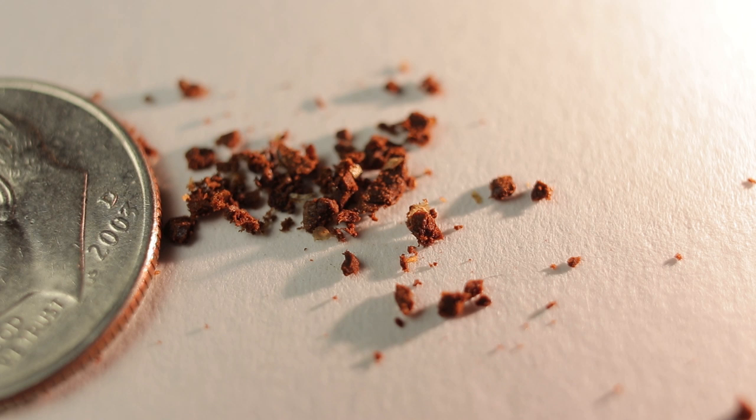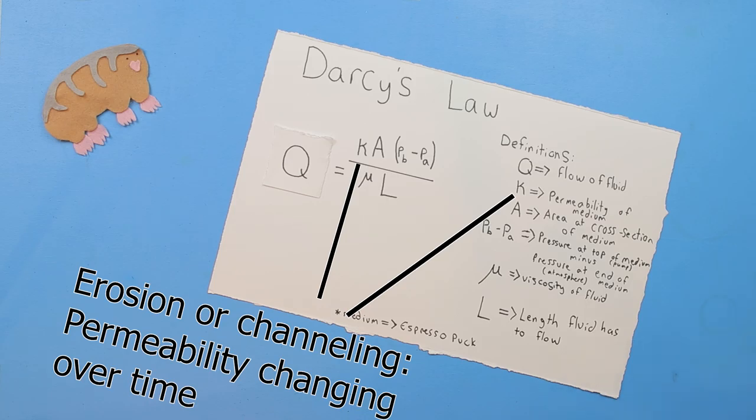Now the next main concepts to review are erosion and channeling, which can be thought of as changes in k over time. Often where there's a trickle of water flowing, it will bring the smallest coffee particles down the coffee puck towards the bottom where they'll get caught and increase resistance.